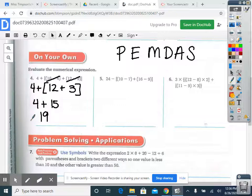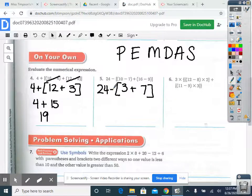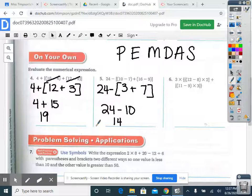Number five. Ten minus seven is three. Sixteen minus nine, that is seven. We brought everything else down. Now we have three plus seven is ten. Twenty-four minus ten, that is fourteen.